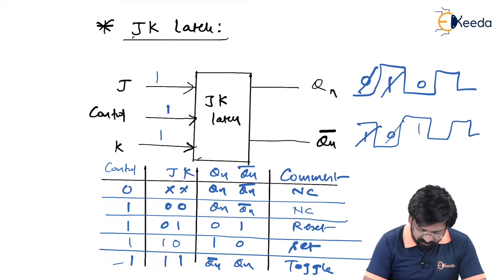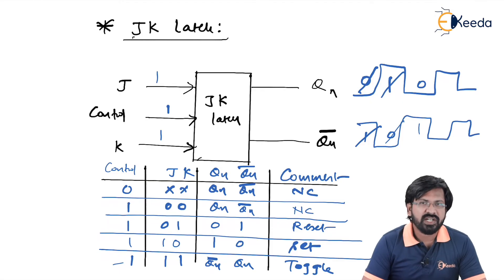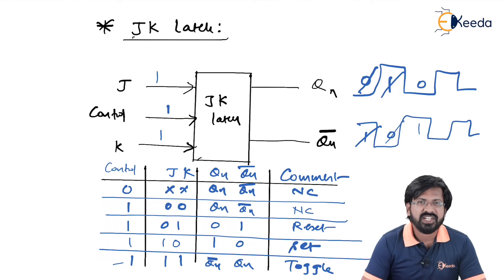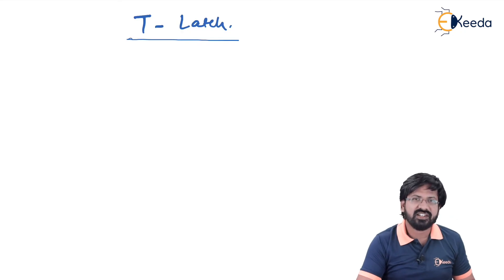This is the working of JK latch. I have not drawn the internal circuit of JK latch because we are going to study its internal diagram later in the next few topics. Once you understand JK, it is very easy to understand T latch because T latch is derived from JK latch only.